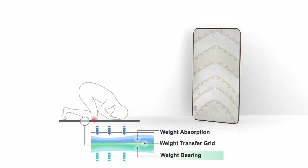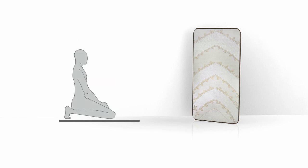The bearing layer creates a buffer between you and the ground. In between the weight absorption and bearing layers is a transfer grid that controls the ratio of absorption and bearing while standing, bending, kneeling, or prostrating.